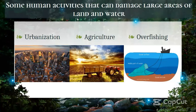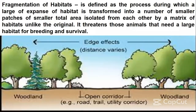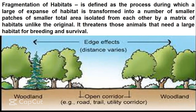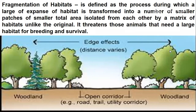Fragmentation of habitats is defined as the process during which a large expanse of habitat is transformed into a number of smaller patches of smaller total area, isolated from each other by a matrix of habitats unlike the original. It threatens those animals that need a large habitat for breeding and survival. Basically, fragmentation of habitats is the process in which a large space of a habitat is divided into different fragments.